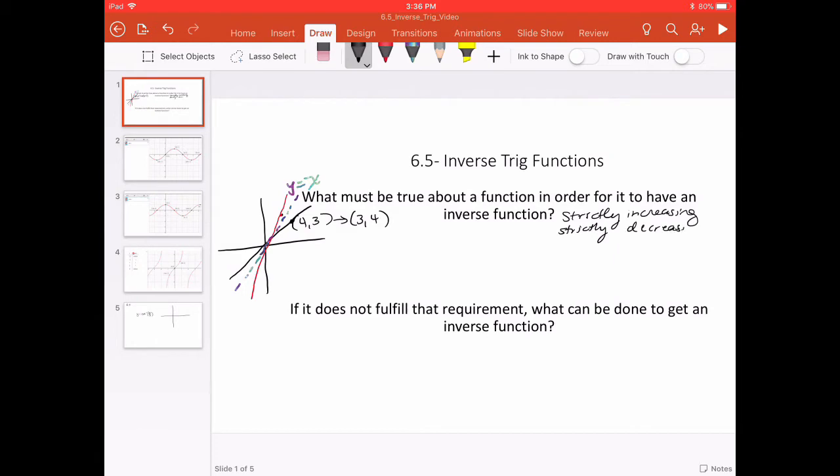It cannot be both increasing and decreasing. That is also what we know as to be one to one, so for every y value there's a unique x value and it passes the horizontal line test. In the case of our parabola, our parabola would not pass a horizontal line test. It's decreasing and then increasing.